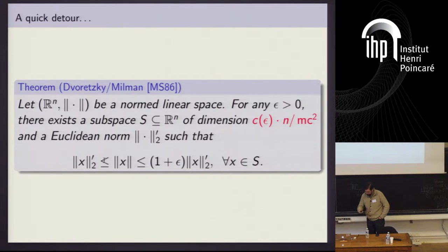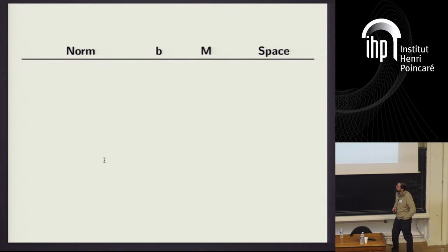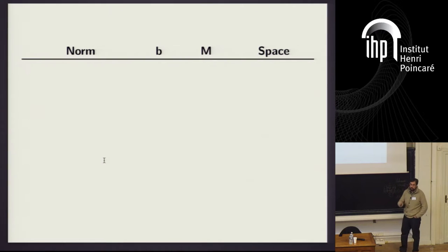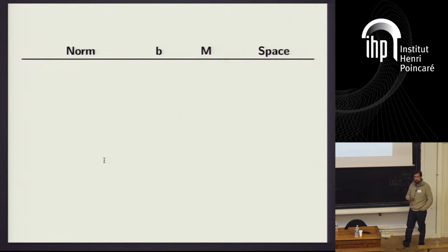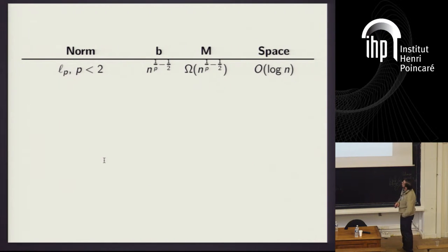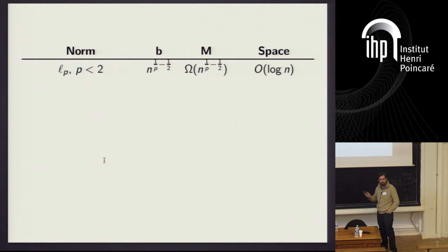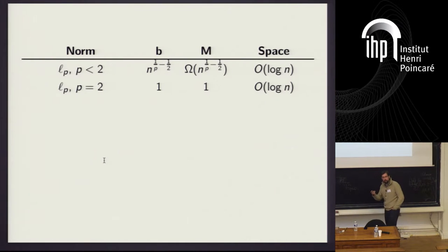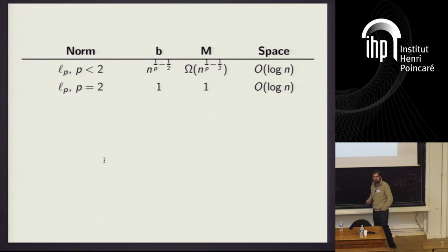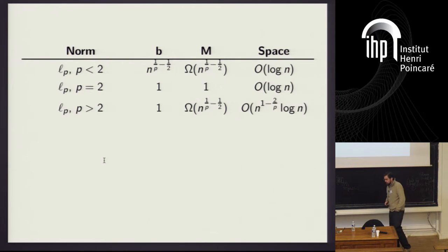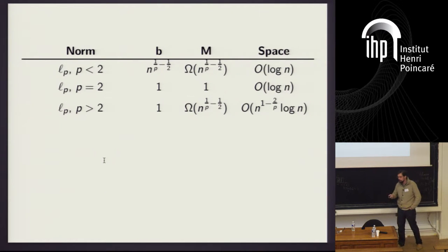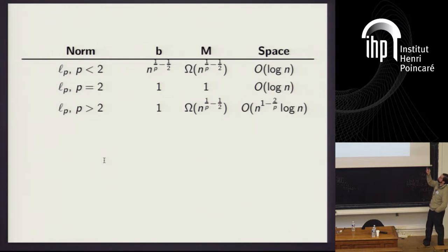Now I'll show you a table of Lp norms and what b, m, and the streaming space complexity are for each. When p is less than 2, b and m are both like n to the (1/p minus 1/2), so the ratio is constant and space complexity is log n. When p equals 2, every point on the unit sphere has 2-norm 1, so space complexity is log n — that's the algorithm I described earlier. When p is bigger than 2, b is 1, and m is n to the (1/p minus 1/2) — a very small number — and the space complexity equals exactly this value, as determined by Indyk and Woodruff in 2005.